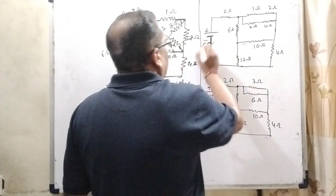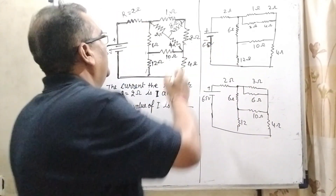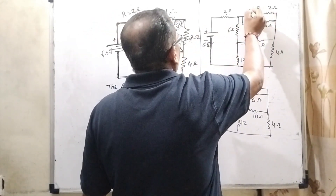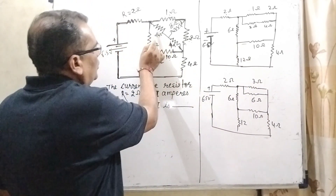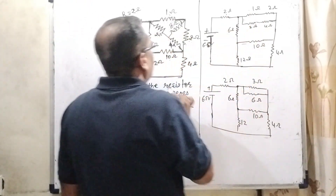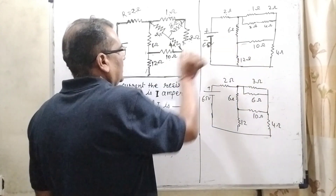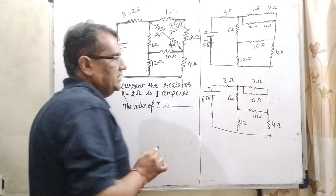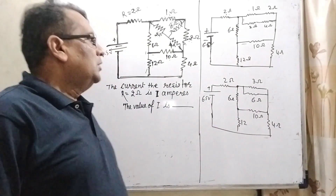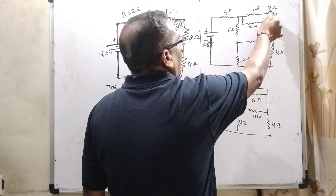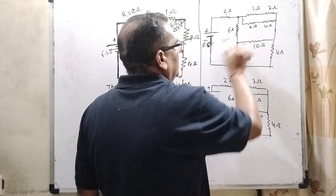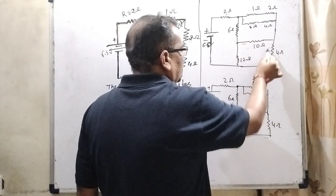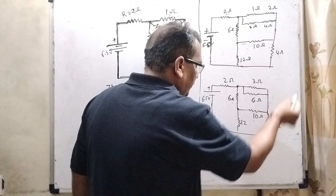Now we redraw this diagram. It is 6.5 volts. Here, 2 ohm and 1 ohm are in series giving 3 ohm, and 2 ohm and 4 ohm are in series giving 6 ohm. So we have a 6 ohm resistance, a 10 ohm resistance, a 12 ohm resistance, and a 4 ohm resistance in the redrawn circuit.